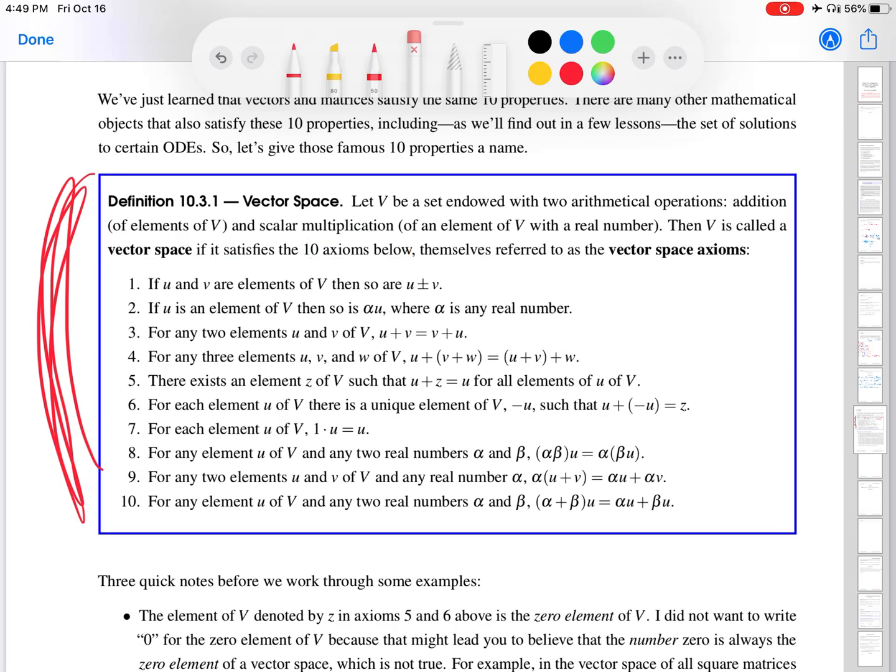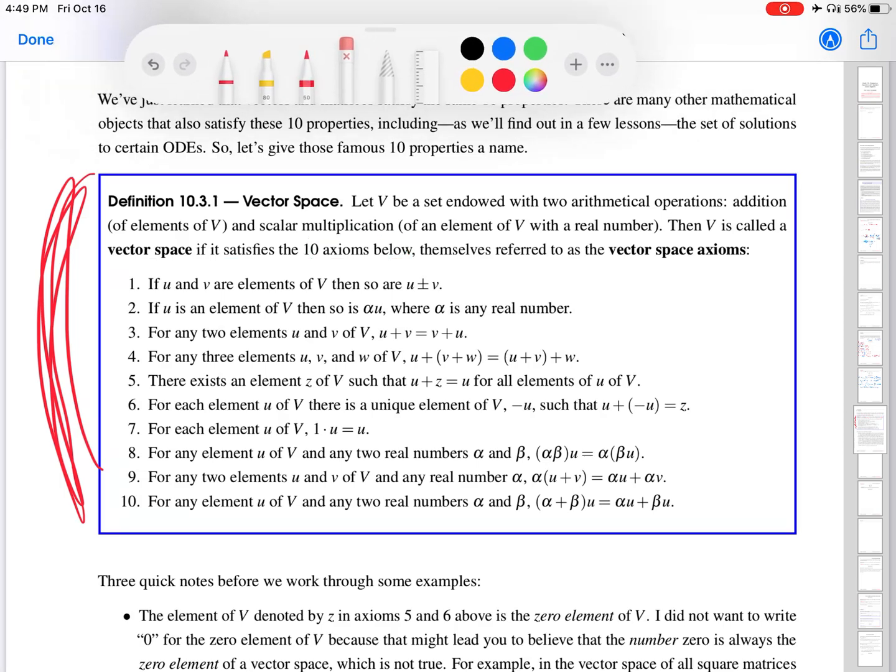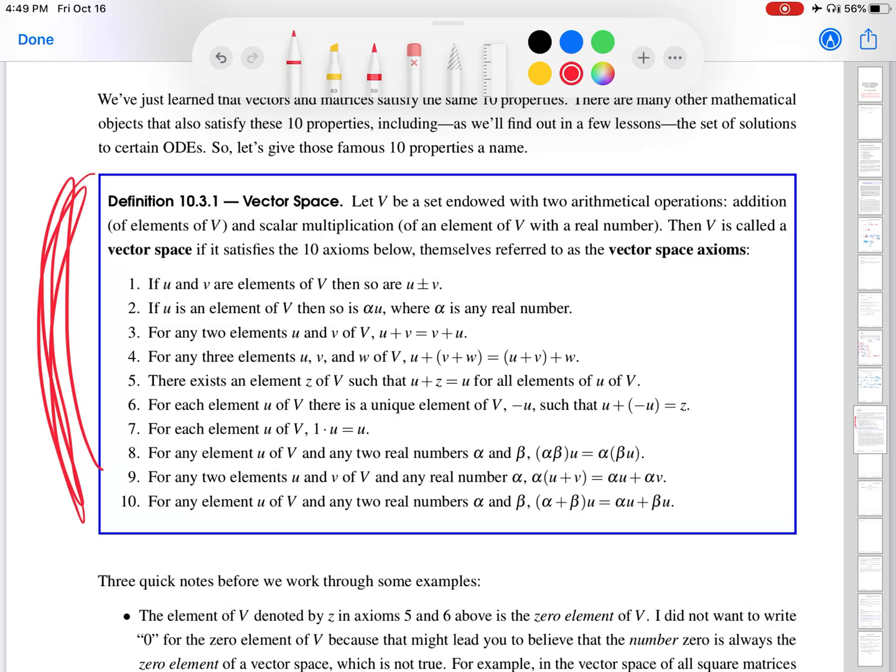What are these vector space axioms? The first one tells you that if u and v are elements of V, then so are the sum and the difference of little u, little v. The second one says that if U is an element of V, then so is the product of U with any real number. This is referred to as closure under addition and subtraction, and closure under scalar multiplication. Closure here refers to the fact that if you add or subtract two elements of V, you don't get thrown out to a different set.